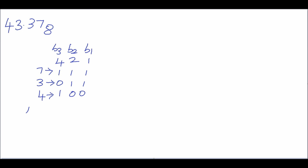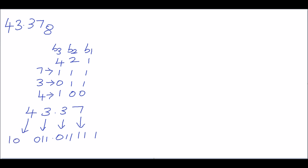Now write the given octal number 43.37 in binary. 7 can be written as 1, 1, 1. 3 can be written as 0, 1, 1. Point. This 3 again is 0, 1, 1. And 4 can be written as 1, 0, 0.